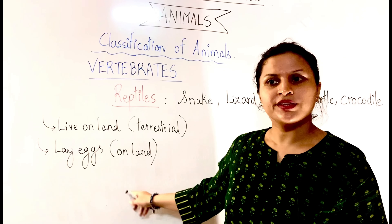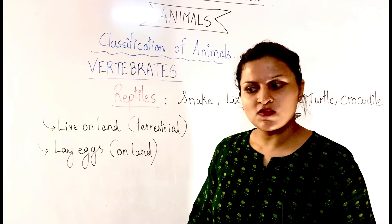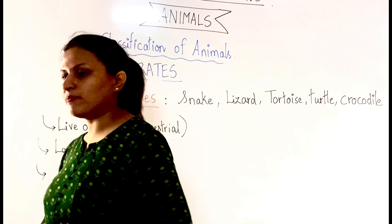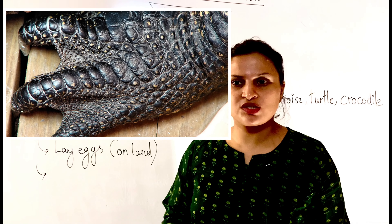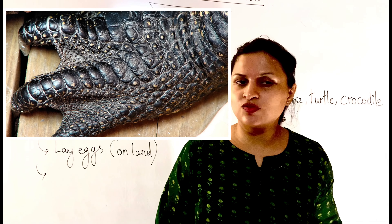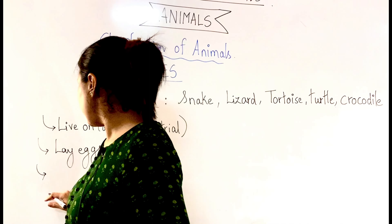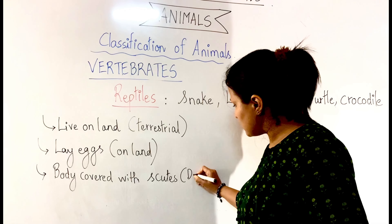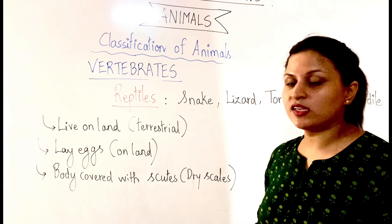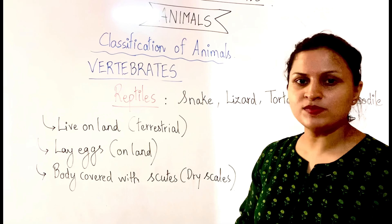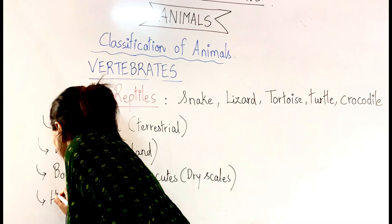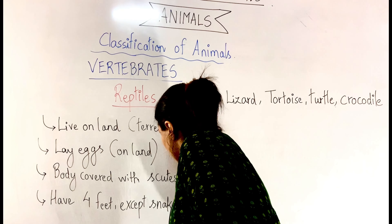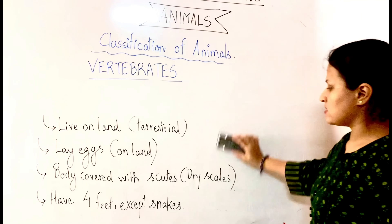Unlike the amphibian's smooth moist body, a reptile's body is covered with very thick, dry scaly structures called scutes — like the tough body covering of a crocodile, the shell of a tortoise, or the rough layer of a snake. Reptiles are also four-limbed animals, having two limbs in front and two behind — except for snakes, which have no limbs.